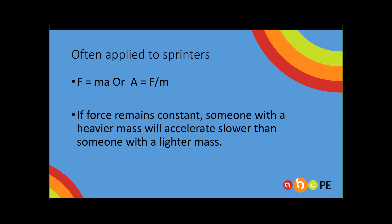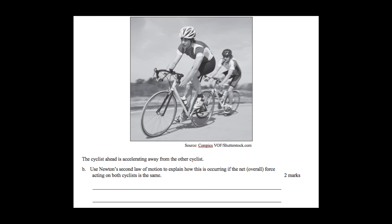Let's put that into action. Going back to the 2018 VCAA exam, question 10b: the cyclist at the front is accelerating away from the other cyclist — that is some key information. It asks us to use Newton's second law to explain how, if the force is equal, this cyclist at the front is accelerating away.